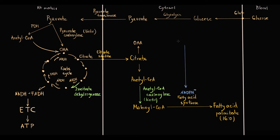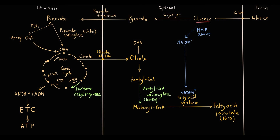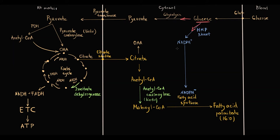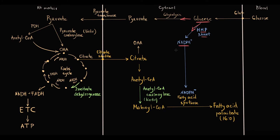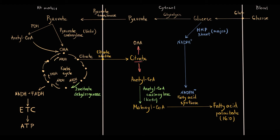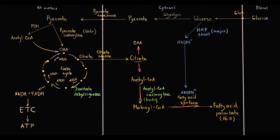NADPH comes from two sources. The major source is the hexose monophosphate shunt, also known as the pentose phosphate pathway, where glucose undergoes degradation with release of NADPH molecules. Once glucose enters the cell, it can either undergo glycolysis to produce pyruvate, or enter the hexose monophosphate shunt to generate NADPH. Additionally, NADPH is generated by malic enzyme: oxaloacetate is converted to malate, and then malic enzyme converts malate to pyruvate using NADP⁺ as cofactor, producing NADPH. Malic enzyme is the minor NADPH source.